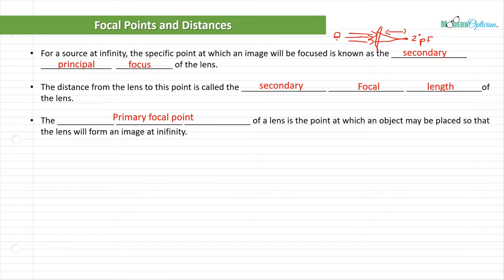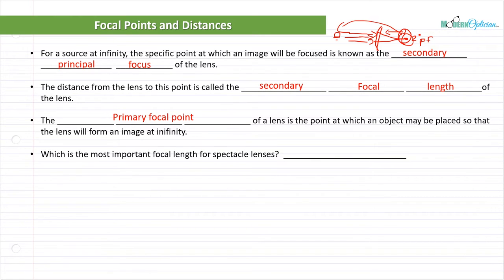The principal focal point of a lens is the point at which the object may be displaced so that it will form the image at infinity. This could be a little confusing — all this is saying is that the primary focal point is the opposite. It's kind of like, where would you have to have the point of the image so that it reproduces the image the other way around? Not really something we concern ourselves with much in ophthalmic optics. The most important focal length for spectacle lenses is the secondary principal focus, the first one we talked about.